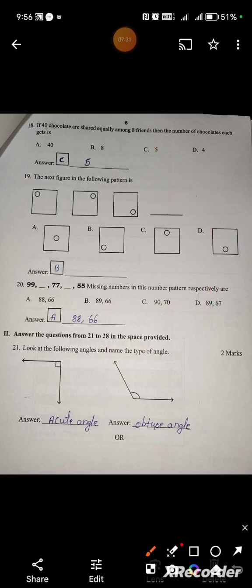The next figure in the following pattern is? First pattern: left, right, then bottom right, then next bottom left. So option is B. Next, 99, blank, 77, blank, 55. Missing numbers in the pattern are backward numbers: 99, 88, 77, 66, 55. Answer is 88 and 66, option A.